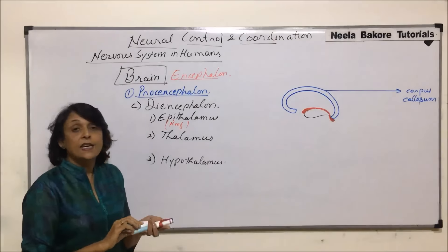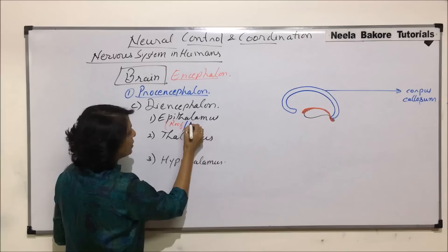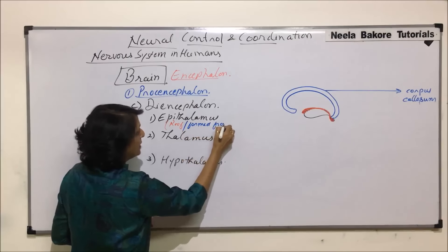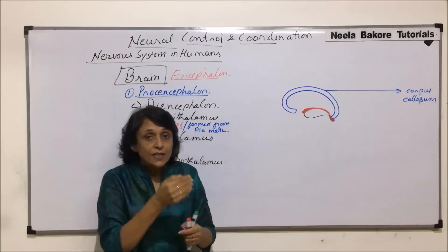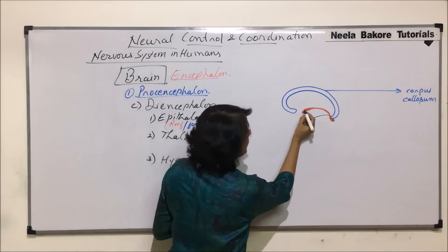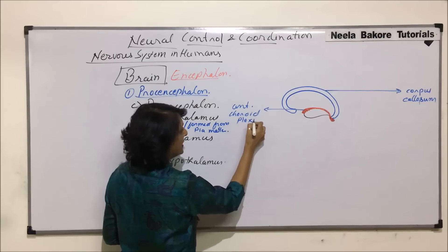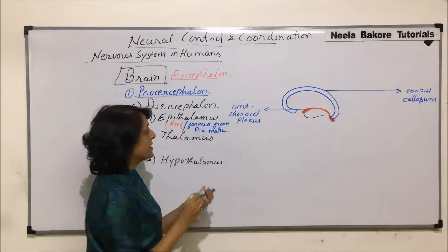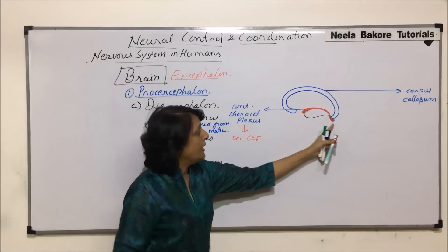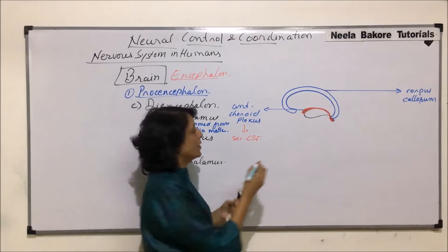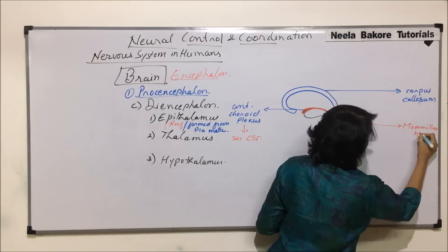This epithalamus is formed from pia mater — the innermost layer of the meninges. It makes the roof and is not nervous. The anterior part is known as anterior choroid plexus, which secretes cerebrospinal fluid. The posterior paired small bulb-like structures are known as mammillary bodies.